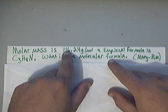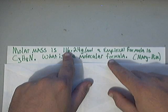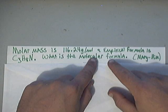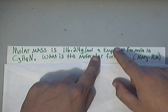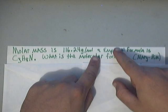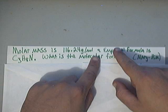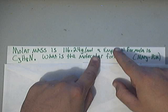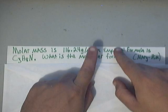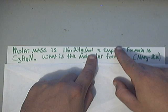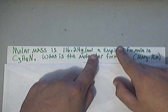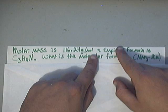That's why they were specific in giving you the molar mass of the molecular formula. Now the only time that the empirical formula and the molecular formula are one and the same is when their molar masses match. They're the same number. Like if both of these were 116.24, then the empirical formula would also be the molecular formula.